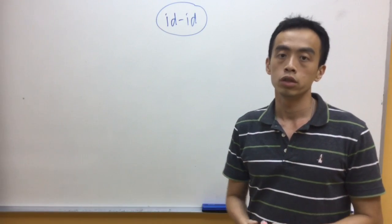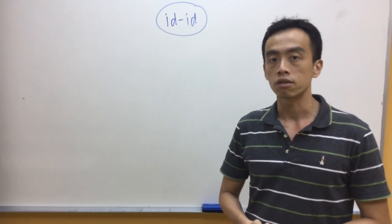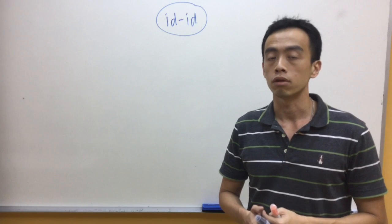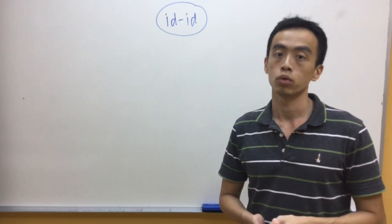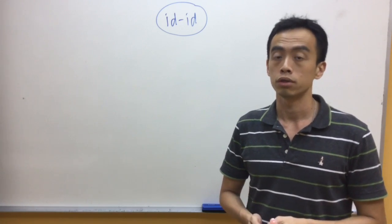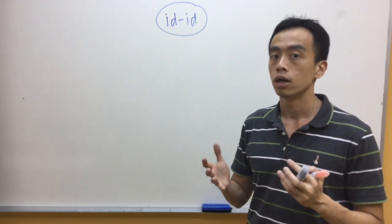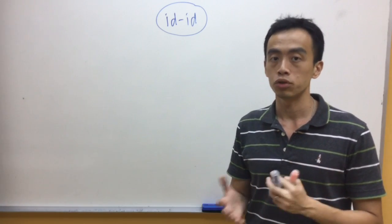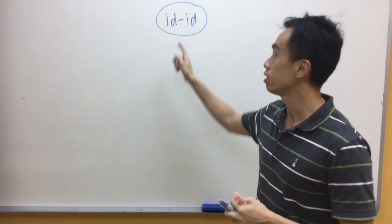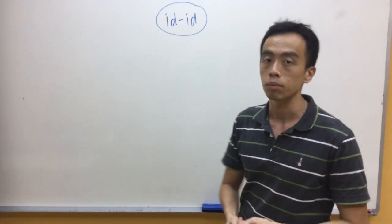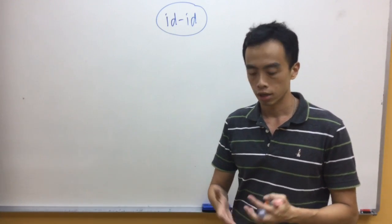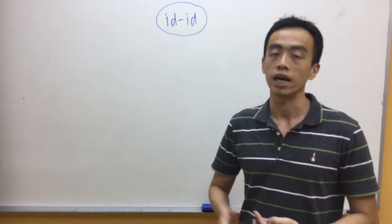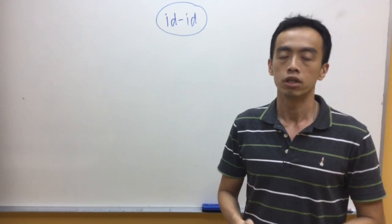What we'll go through in this video is the factors affecting ID-ID interaction for non-polar molecules. We know that the interaction between non-polar species is our instantaneous dipole-induced dipole interaction. What are the factors affecting this ID-ID interaction?